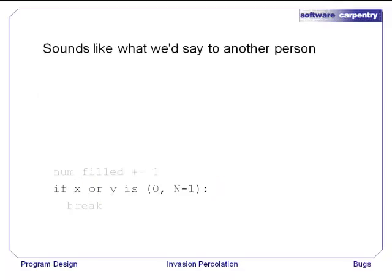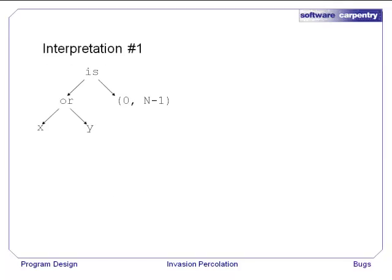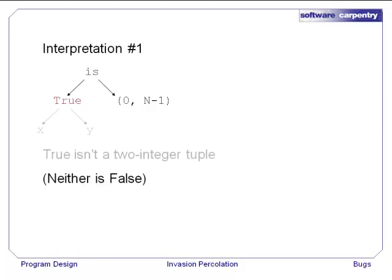This version sounds like what we'd say to another person: if x or y is 0 or n minus 1. But how will the computer interpret this? Let's take a look at the expression tree that the computer uses. One way the computer might interpret it is x or y is 0, n minus 1. Well, x is an integer, y is an integer. Let's assume that they're both non-zero. The result of the expression x or y will be true. True is never going to be a two-valued tuple. So this will always fail and we'll never exit our loop. This definitely isn't right.